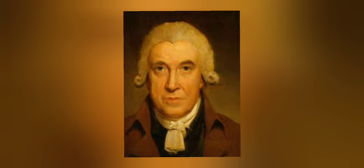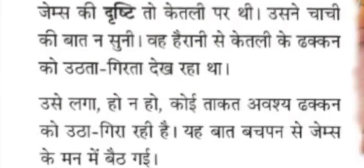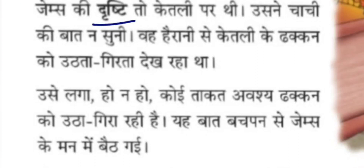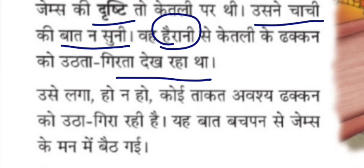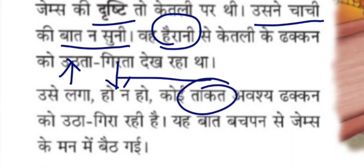James was observing the kettle from the side. Usne chaachi ki baat na sune — he could not hear what his aunt was scolding because with full concentration he was observing the kettle. Hairan se ketli ke dhakkan ko utta girta dekh raha tha — very surprised, he was watching the kettle's lid moving up and down. Utta means moving up, girna means going down. Usne laga ho na ho koi takat avashya dhakkan ko utha gira raha hai — some power is definitely there which is making the lid move up and down.